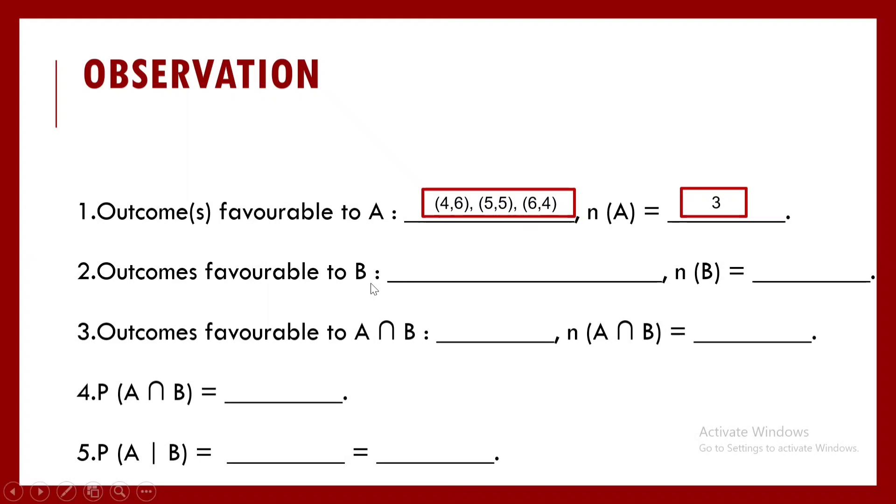What about the outcomes favorable to B? B was what? The event of getting a doublet. Event of getting a doublet means the outcomes favorable to B can be 1,1, 2,2, 3,3, 4,4, 5,5, and 6,6. So N of B is equal to 6.